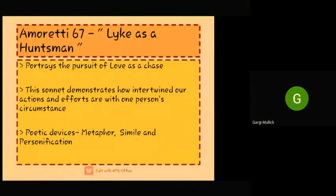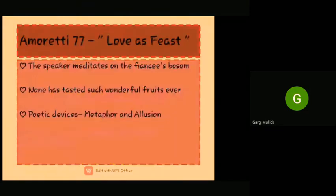The rhyme scheme of the poem as a Spenserian sonnet is ABAB BCBC CDCD EE. It consists of three four-line stanzas, known as quatrains, and one heroic couplet. The poetic devices used are metaphor, simile, and personification. The theme of Sonnet 67 is love, because it refers to the man trying to win the love of his life, using the huntsman chasing a deer as context.